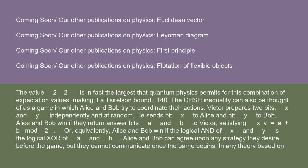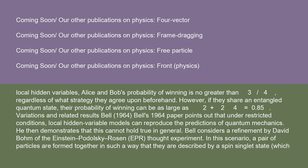The CHSH inequality can also be thought of as a game in which Alice and Bob try to coordinate their actions. Victor prepares two bits X and Y independently and at random. He sends bit X to Alice and bit Y to Bob. Alice and Bob win if they return answer bits A and B to Victor satisfying XY = A + B mod 2, or equivalently, the logical AND of X and Y is the logical XOR of A and B. Alice and Bob can agree upon any strategy before the game, but cannot communicate once it begins. In any theory based on local hidden variables, their probability of winning is no greater than 3/4, regardless of strategy.